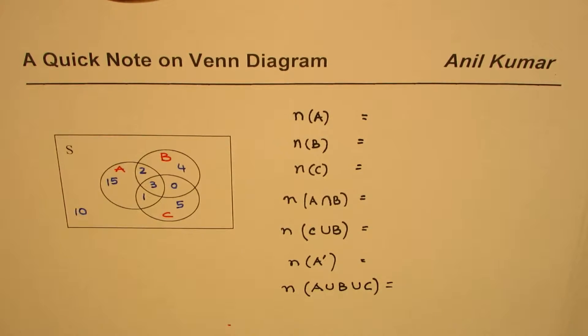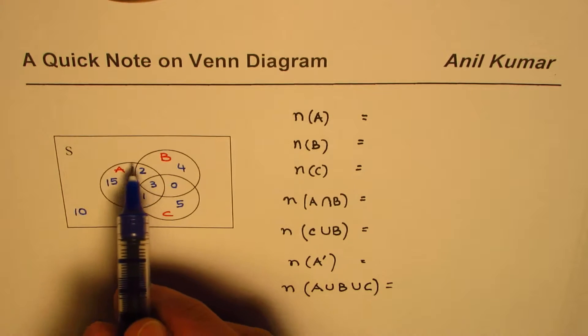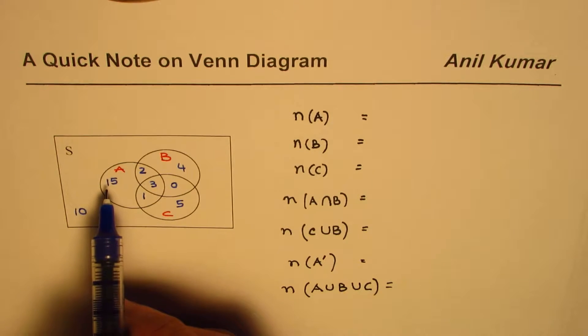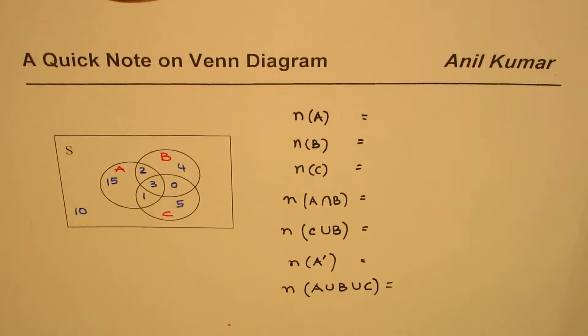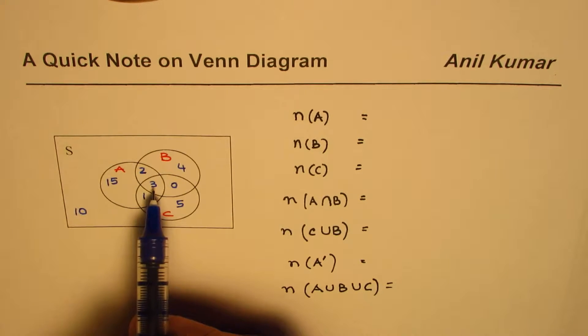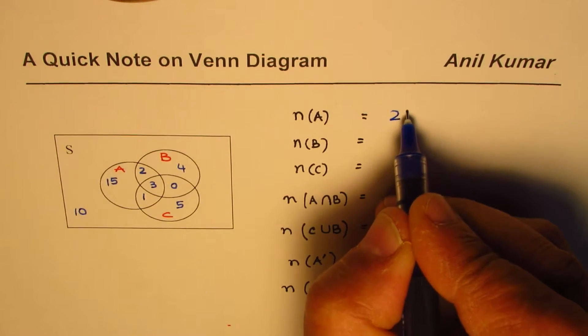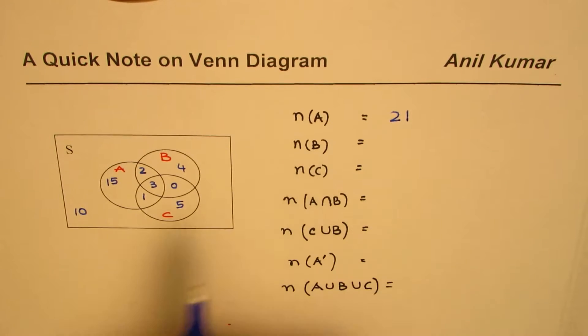Okay, now I hope you've got your answers by now. Let's write down the answers. Number of elements in A: this circle represents all the elements in A, so 15 plus 2 plus 3 plus 1, which is 15 plus 2 is 17, and 3 is 20, plus 1 is 21. So we have 21 elements in A.